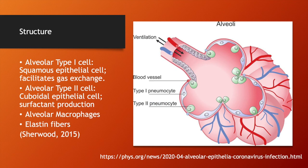The structure of the alveolus is straightforward. There are two types of cells that make up the alveolus. The alveolar type 1 cell is a squamous epithelial cell and it facilitates gas exchange. Alveolar type 2 cells are cuboidal epithelial cells responsible for making surfactant. There are also immune cells in the alveolus — in particular the alveolar macrophage, which is responsible for getting rid of pathogens. Elastin fibers also make up the alveolus, giving it its elastic properties.